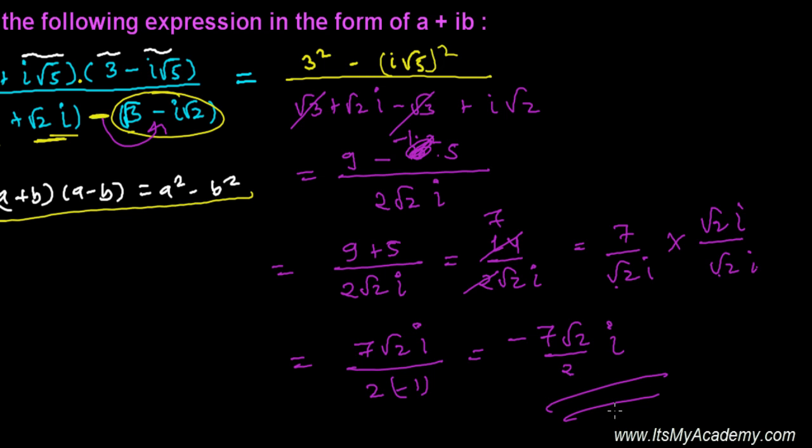You can express this in the a + ib format as 0 plus... or you can write it as 0 minus 7√2 over 2i. This is our final answer.